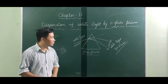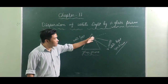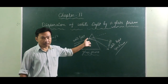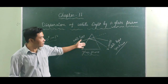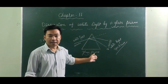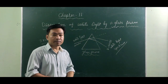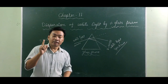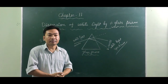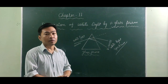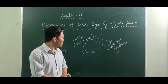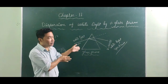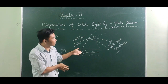This band of seven different colors which we get is known as the spectrum. One example of a natural spectrum is the rainbow. Now we have to go deeper inside - why do we get these seven different colors?